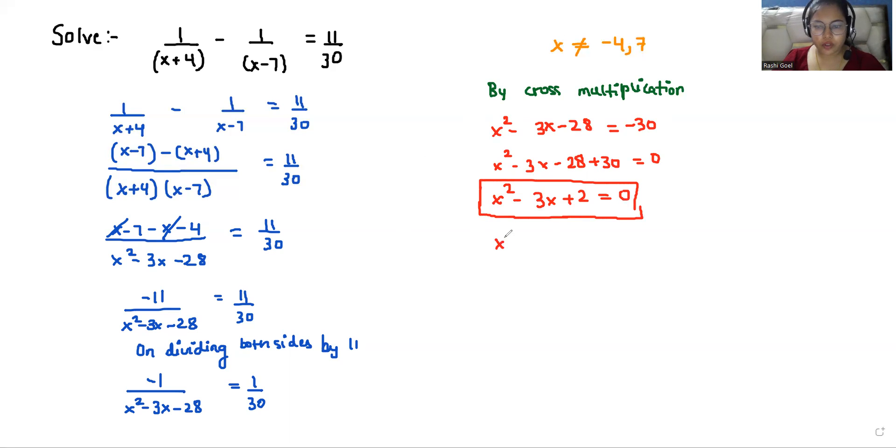So we can write this equation as x² - 2x - x + 2 equals 0. So from the first two terms, I can take x as common, so x(x-2). And from the last two, I can take -1 as common.